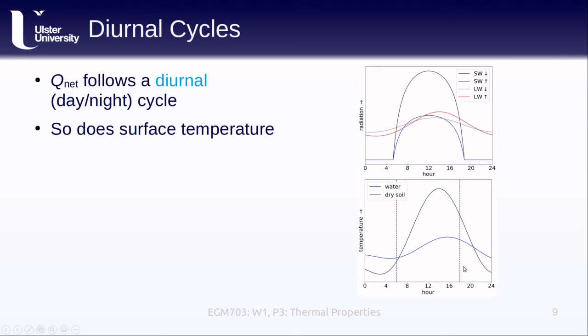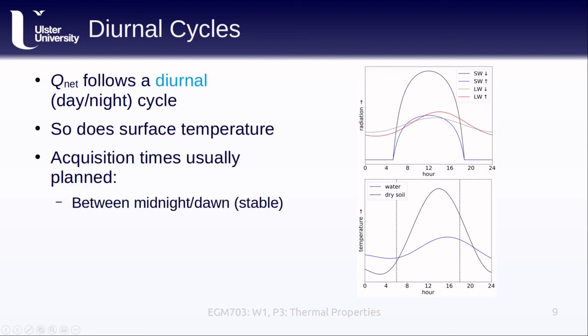As the surface is heated up during the day by the sun, it warms up, then it cools down throughout the rest of the afternoon and into the night. Different materials, given their different thermal properties, will have a very different diurnal cycle. Because water typically requires more energy to increase its temperature, it heats up much more slowly, doesn't get as warm during the day, and cools down less at night compared to something like dry soil. Because of these differences, we typically want to plan thermal remote sensing acquisitions between midnight and dawn, when surface temperatures are relatively stable or during the middle of the day, which is when we see the greatest temperature contrast between different materials. We want to try to avoid acquisitions during the time of day when we see these two lines crossing each other, because it's more difficult to distinguish between different materials at these crossover times.